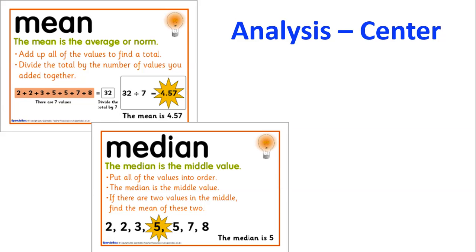If you happen to have two values in the middle, then you would simply add them together and divide by two, and that will find the average of them, the middle of those two numbers.